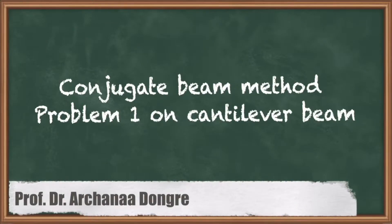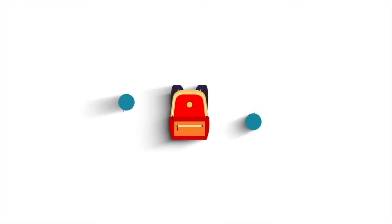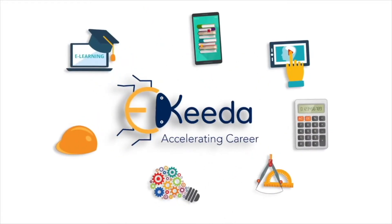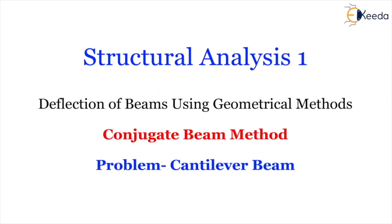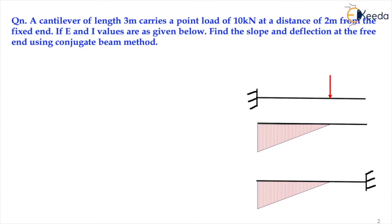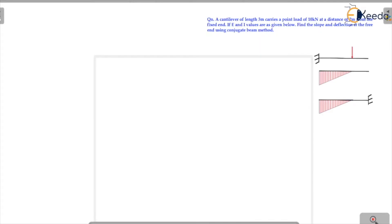Hello students. Let's start the question on cantilever beam. Using the conjugate beam method we are going to solve a numerical. Let's see the question: a cantilever of length 3 meter carries a point load of 10 kN at a distance of 2 meter from the free end. E is equal to 2 × 10⁵ N/m² and I is equal to 10⁸ mm⁴. Find the slope and deflection of the free end using the conjugate beam method.